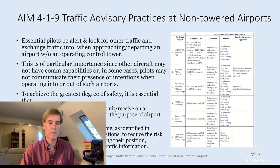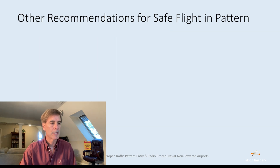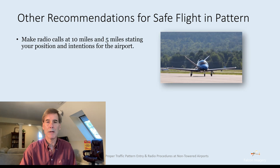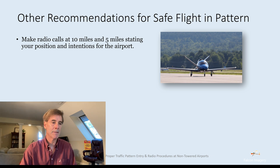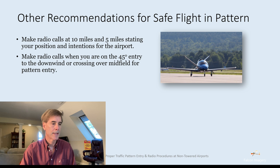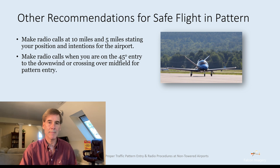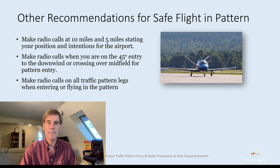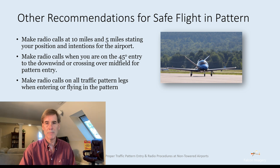I recommend making radio calls not only at 10 miles but also at 5 miles. Make those calls stating your position and intentions — for example, '10 miles to the south, inbound for runway 26.' Make radio calls when you are on the 45-degree entry to the downwind or when crossing over midfield for pattern entry. Make radio calls on all traffic pattern legs. Even if I think I'm the only one in the pattern, I'm still making those radio calls — it's a good idea to keep others aware of what you're doing.